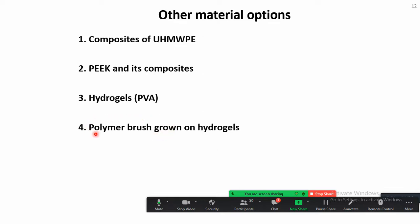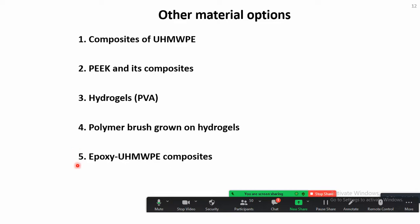The polymer brush also has the property of attracting water molecules because of their charged sites, which can increase water content at the interface and improve the lubrication process. Another material combination that is the subject of our work is epoxy-UHMWPE composites, where epoxy is used as the matrix and UHMWPE as the filler, rather than UHMWPE as the matrix.